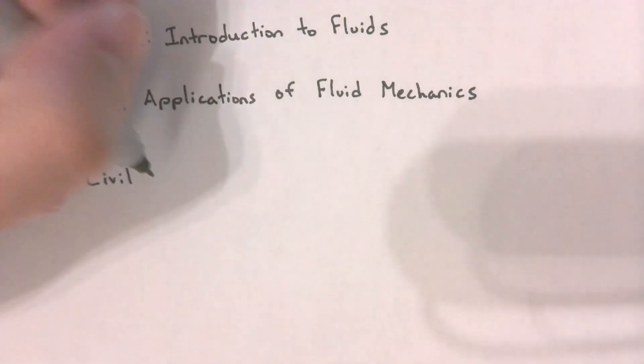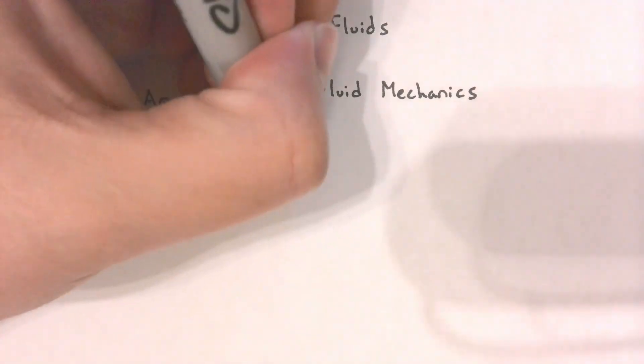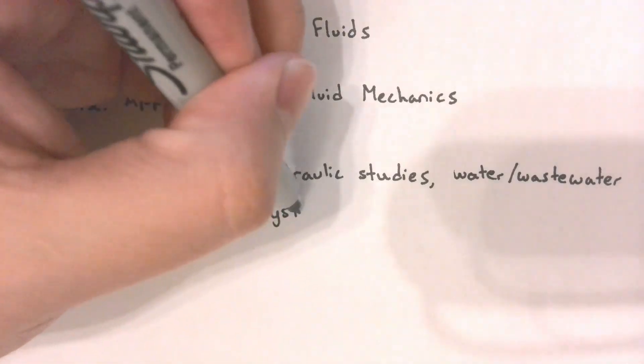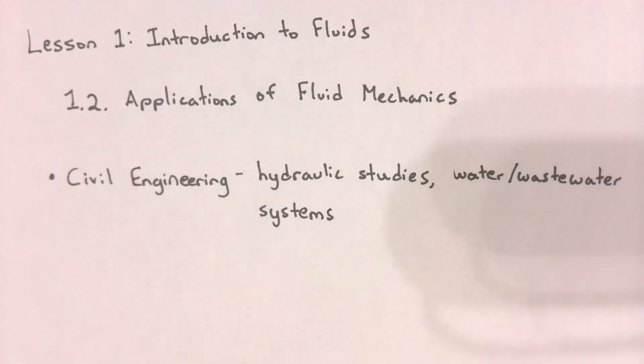In the civil engineering field, most of fluid mechanics comes in the form of hydrologic and hydraulic studies. We civil engineers use fluid mechanics principles, particularly some of the more empirical equations, to design storm drainage systems, water and wastewater systems, to study dams, and to determine flood levels, as well as determine elevations for open channels.